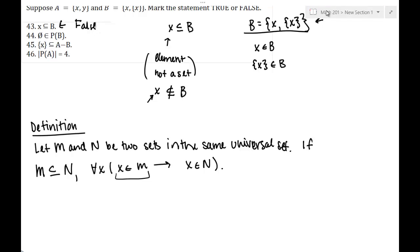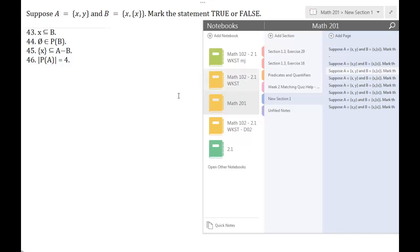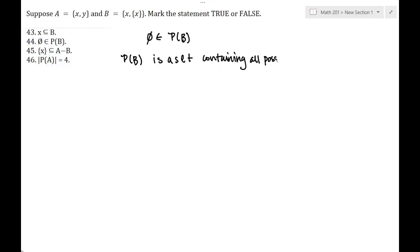Let's look at the next problem, which involves power sets. We want to determine if the empty set is an element of the power set of B. This is always going to be true for any set we consider — the empty set is always an element of the power set. The power set of B is the set containing all possible subsets of B. Let's look at B and figure out what the power set of B is.